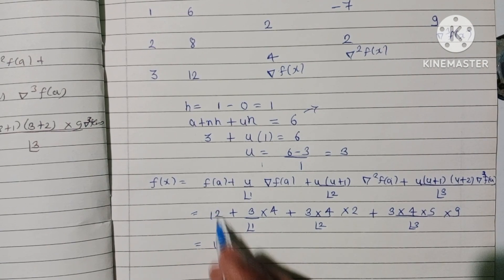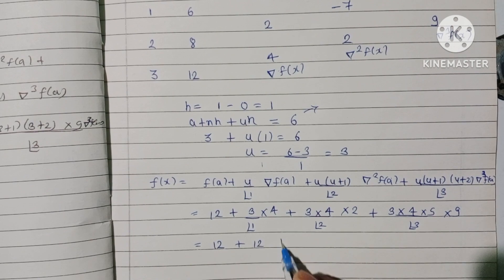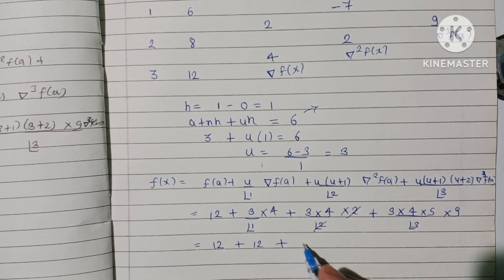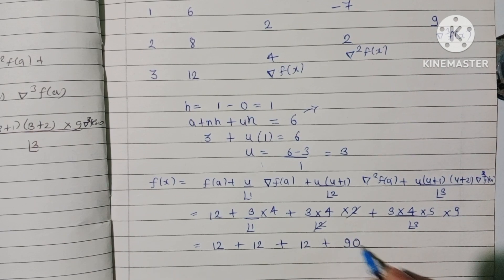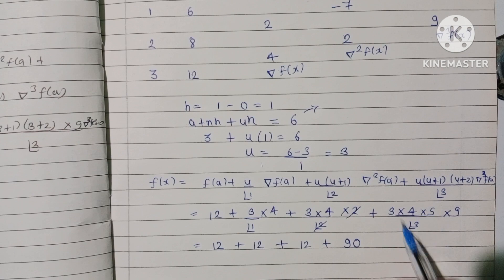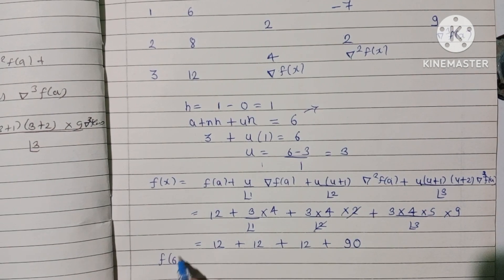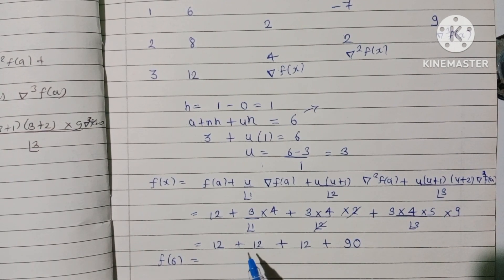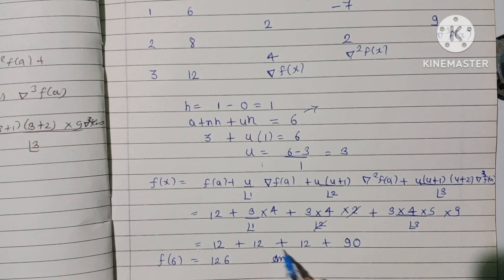Now solving: 12 + (3·4 = 12) + ... After computing all terms, the sum gives f(6) = 126. So 126 is our answer.